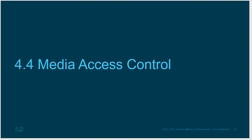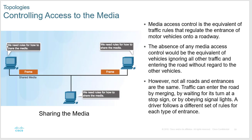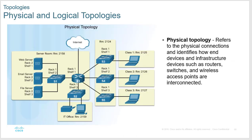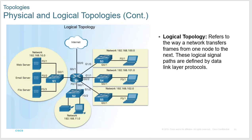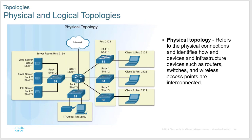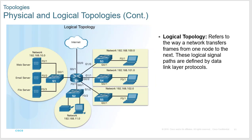Media access control defines the rules for who can talk and when. Physical topology refers to the actual devices and their physical arrangement through the network. Logical topology refers to how data moves — what path does data actually travel as it gets from point A to point B.